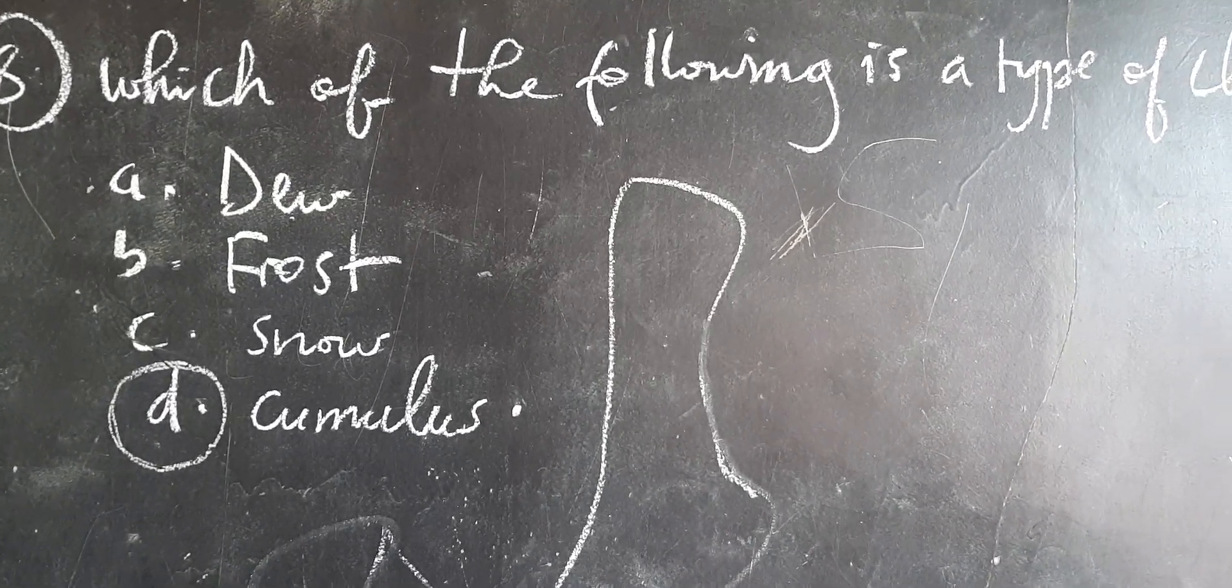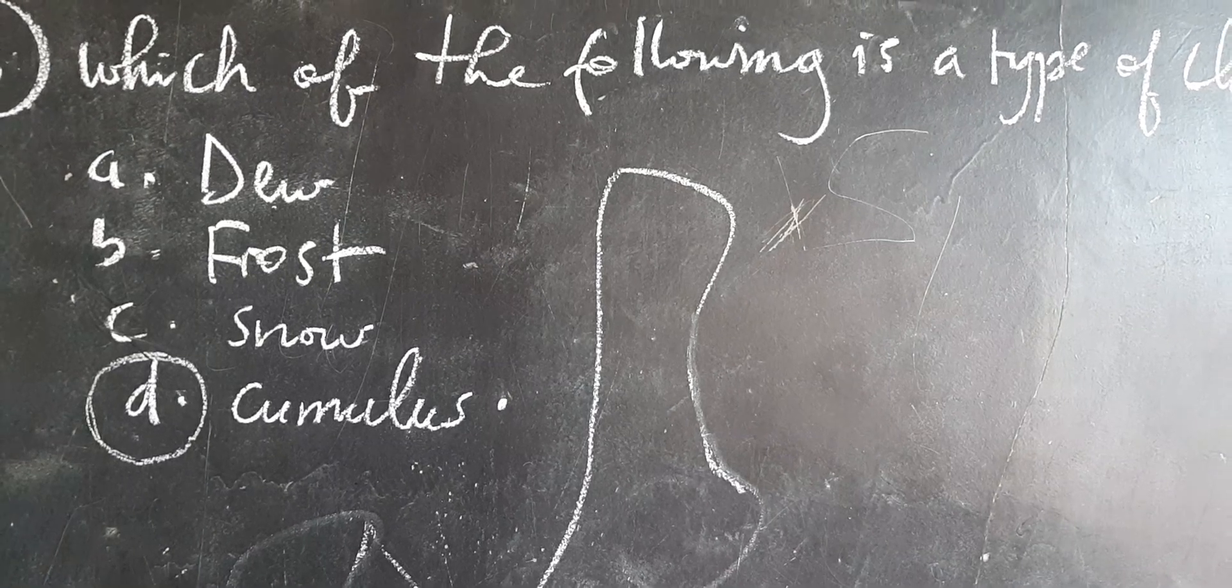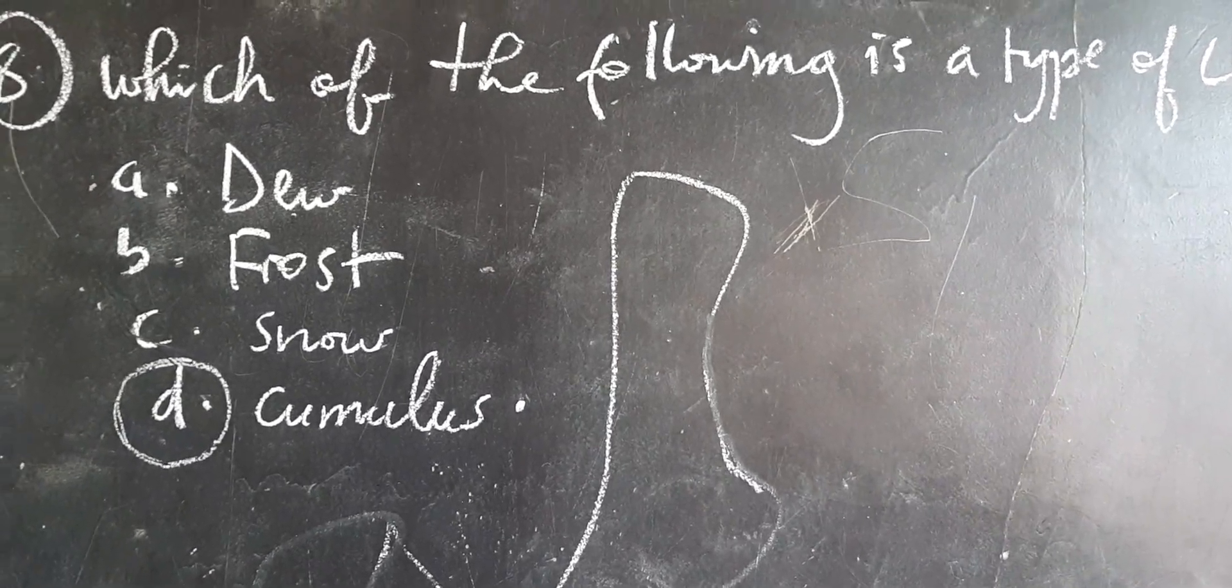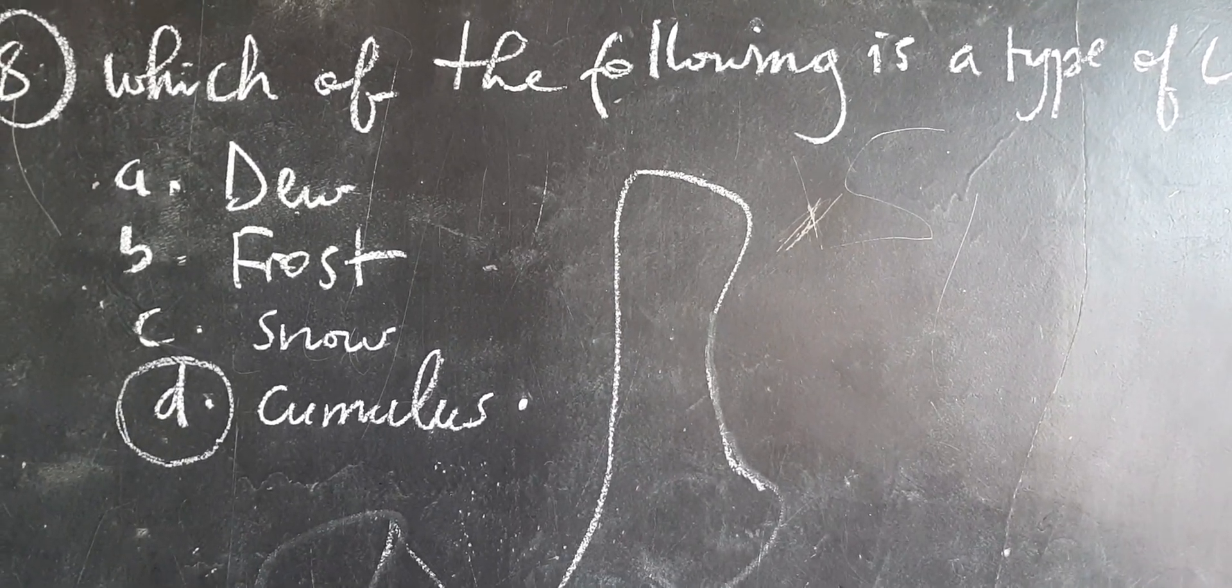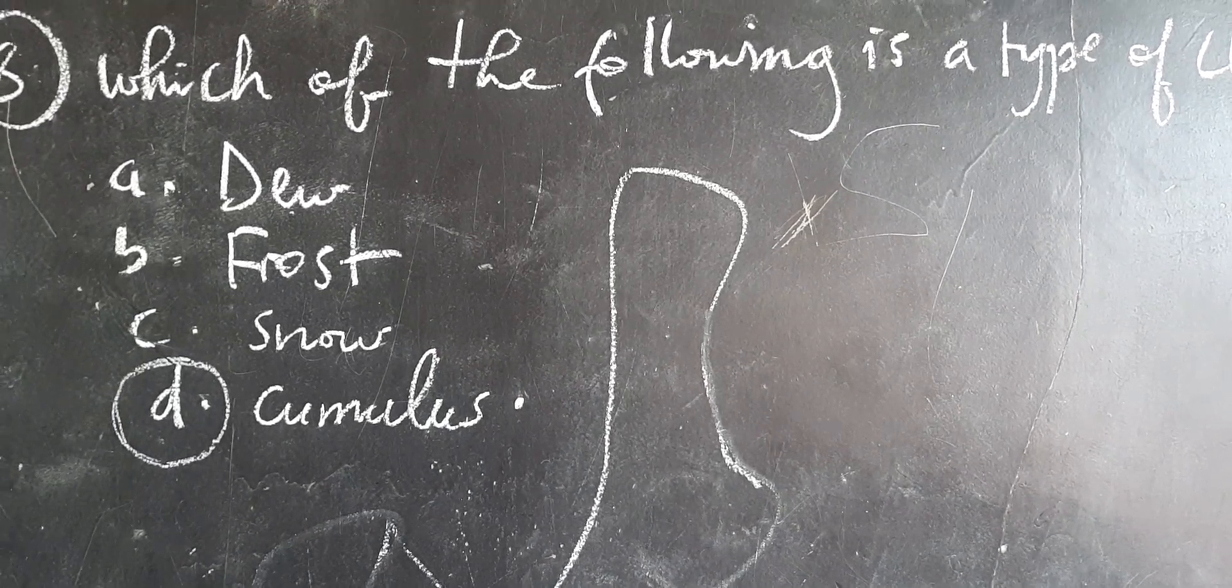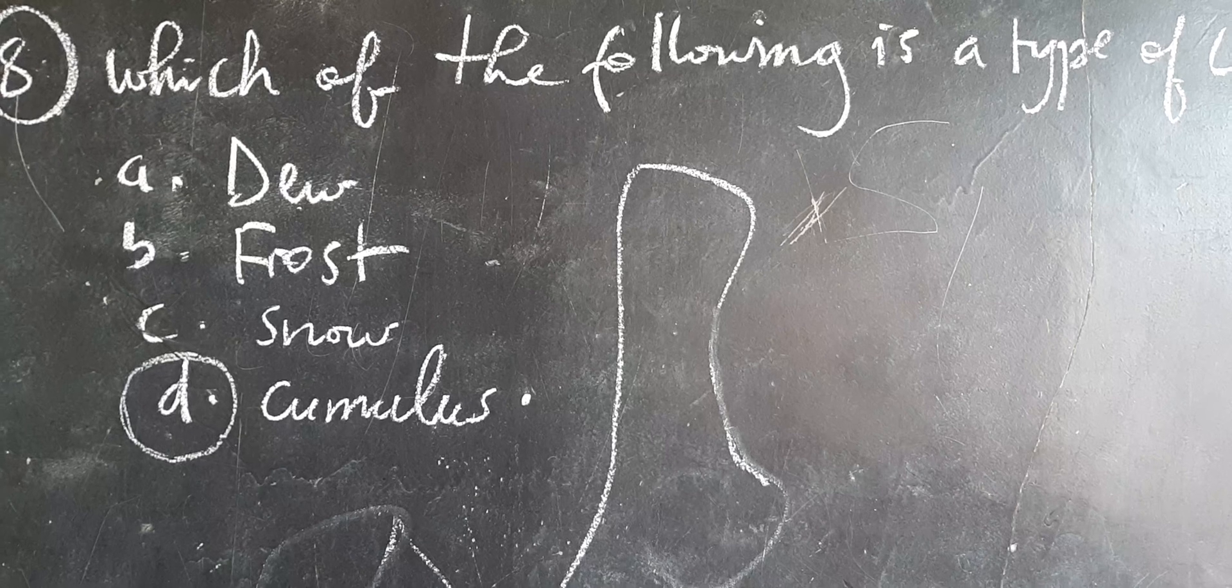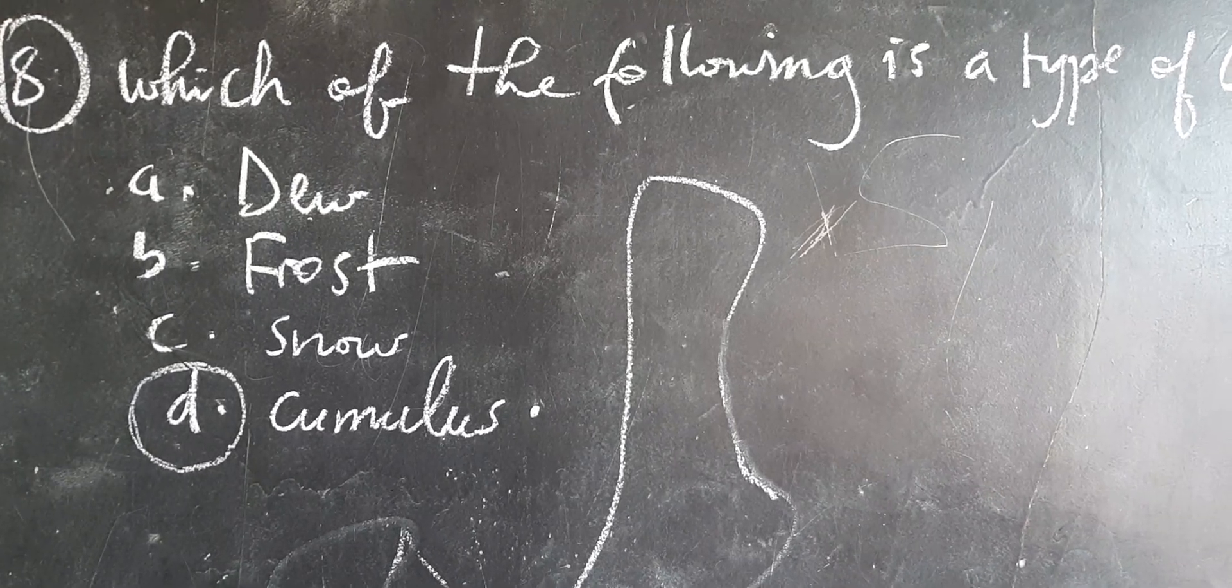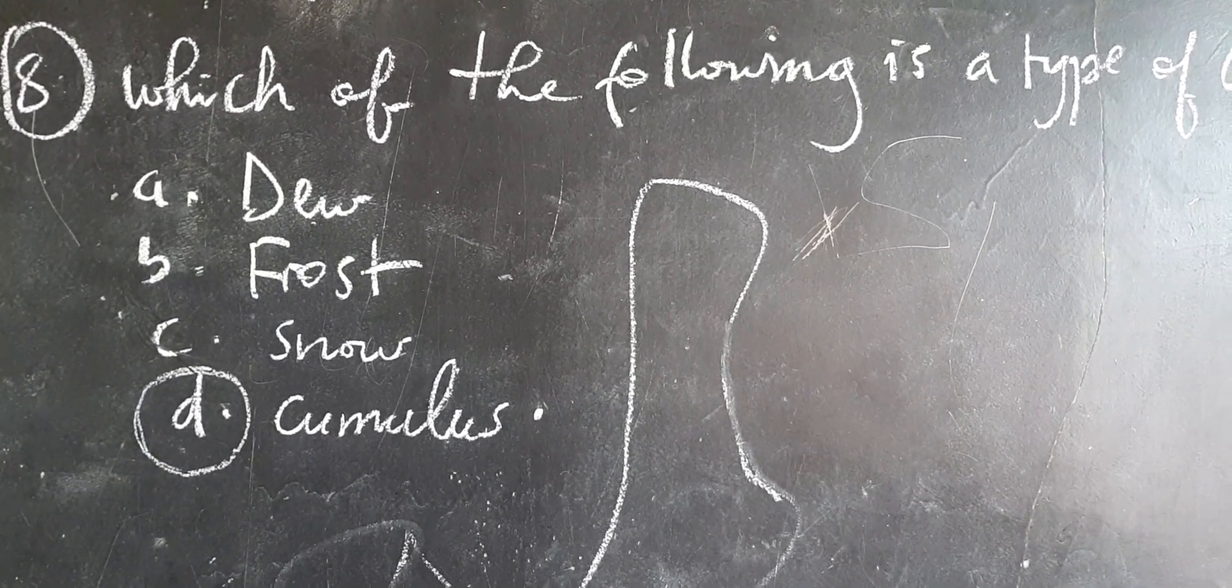So the correct answer is D, which is cumulus. Cumulus is a type of cloud. But the listed above terms like dew, frost, and snow are forms of precipitation. Therefore the correct answer is D.